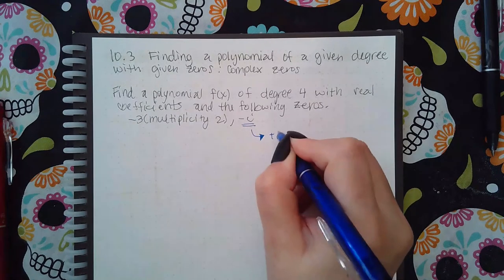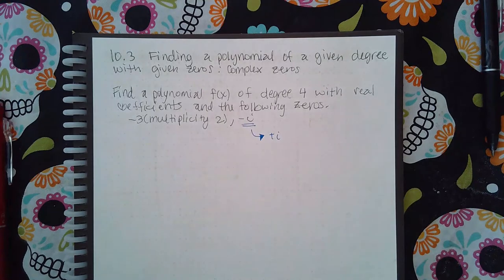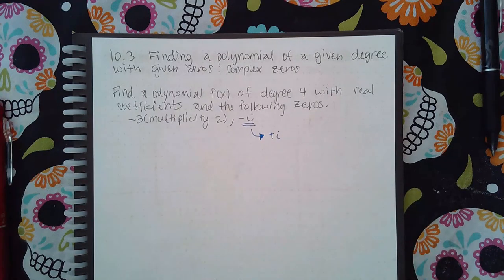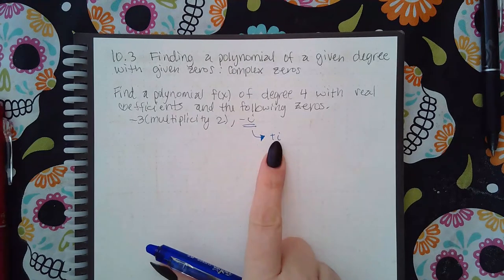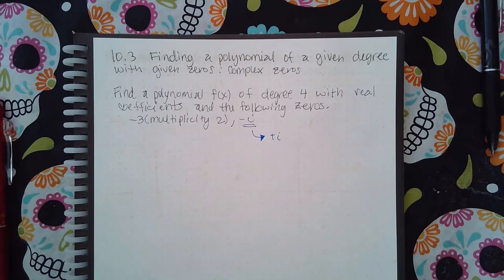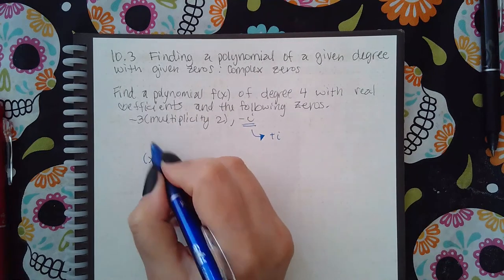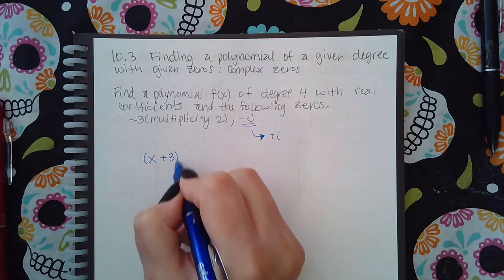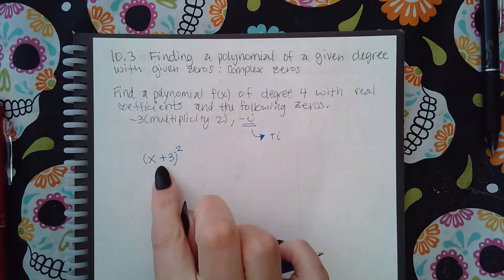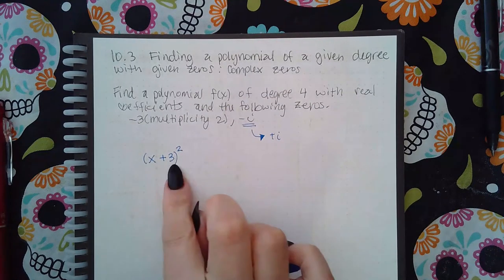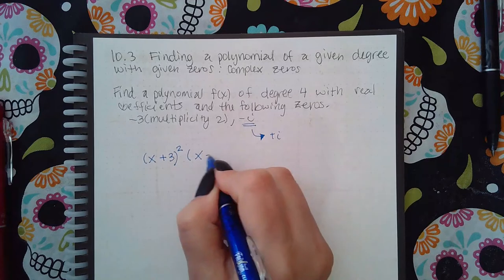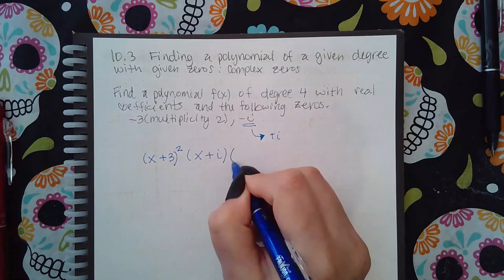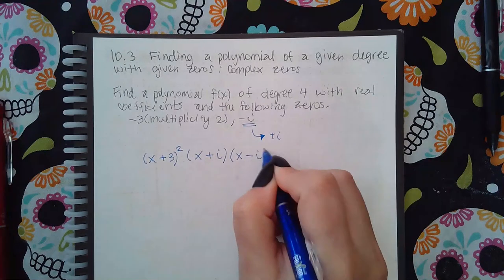So not only do I have negative i, but I also have its conjugate which is positive i. Because I'm doing degree four, I should have four factors. I do have negative three twice and then I have this guy and then I have this guy, so that's four factors. I'm gonna have (x+3) with multiplicity of two, so there's two factors here written as a square. Then for this one I would have (x+i) and then for this factor I would have (x-i).